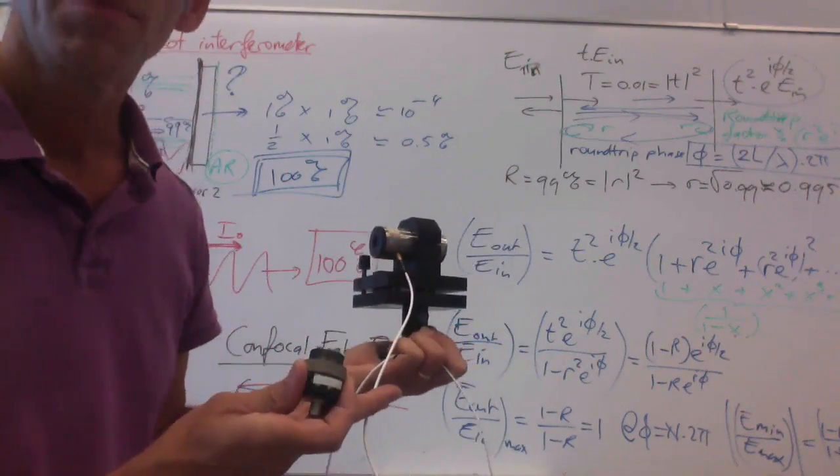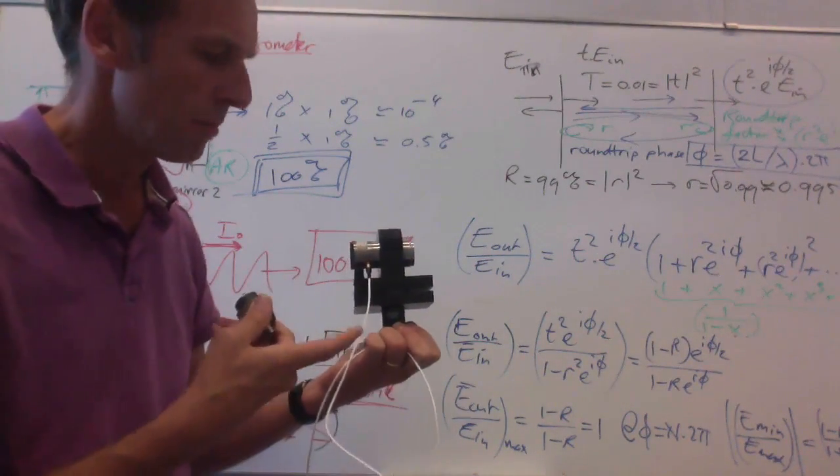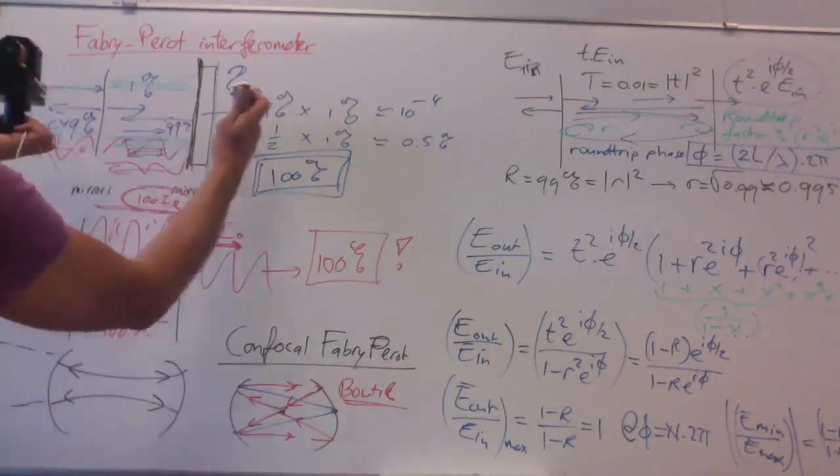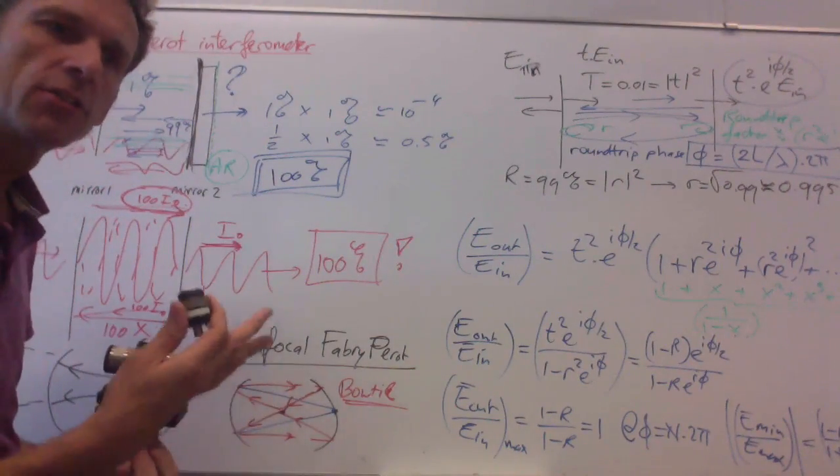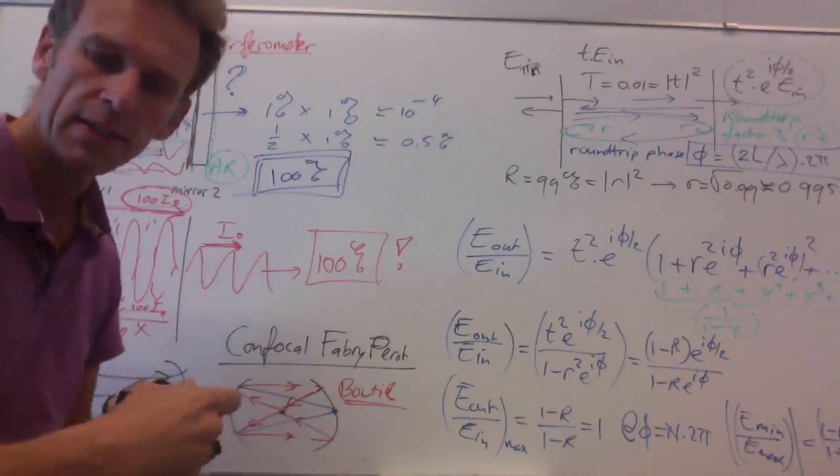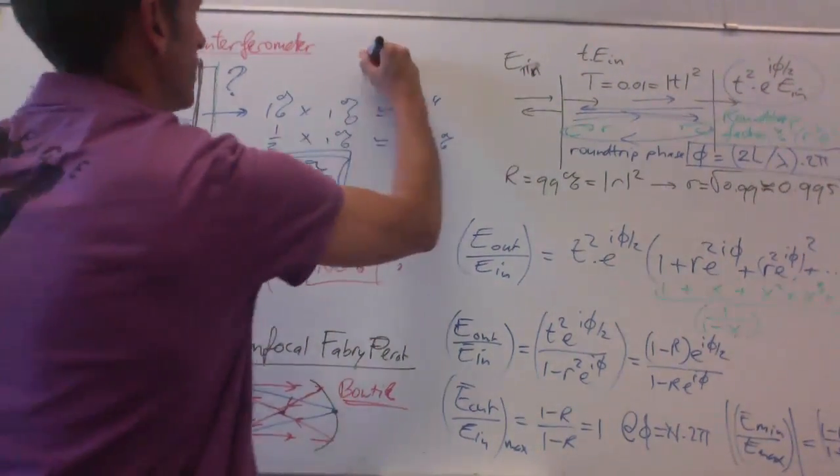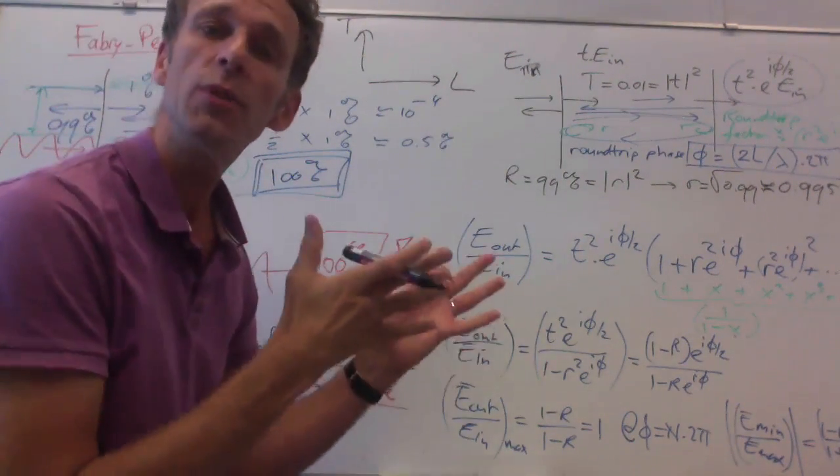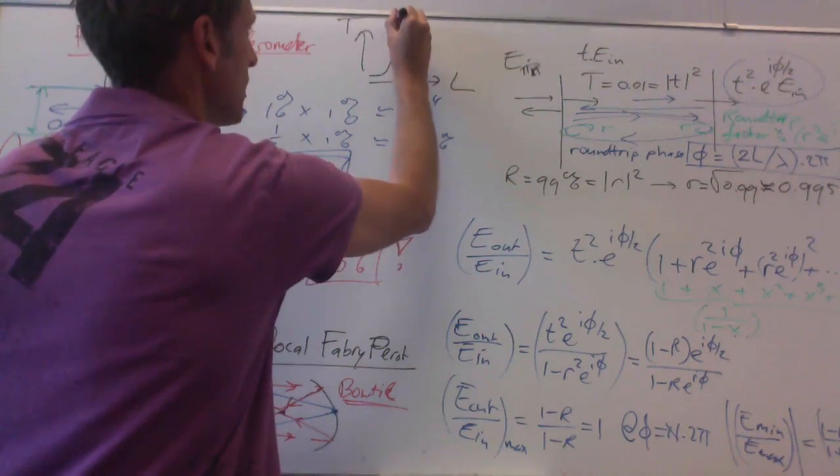And you might also have noticed this wire. This wire is attached to a piezo element. And this piezo element, if you put voltage on it, it expands. And this piezo element allows you to wiggle the length of the cavity. And that's very convenient because if you do that, then what you typically have, if you look at the transmission as a function of the length for a laser with a fixed wavelength, then for some length the wavelength fits.